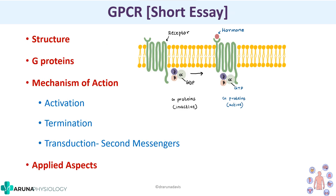If a short essay on GPCR is asked in an exam, you should write about the structure, what G-proteins are, the mechanism of action including how GDP is converted to GTP, how it is terminated with GTP converted back to GDP, and signal transduction via second messengers. It is especially important to mention the second messenger systems and give examples of second messengers, and finish with some applied aspects. I hope this video was clear. Thank you.